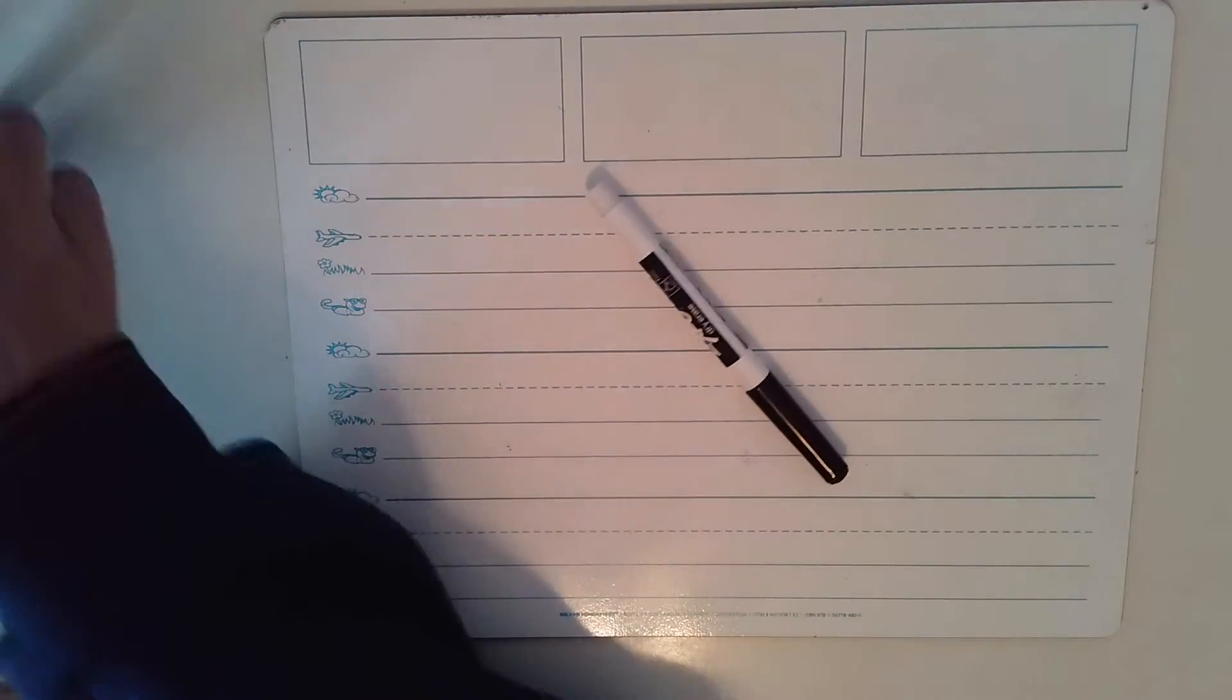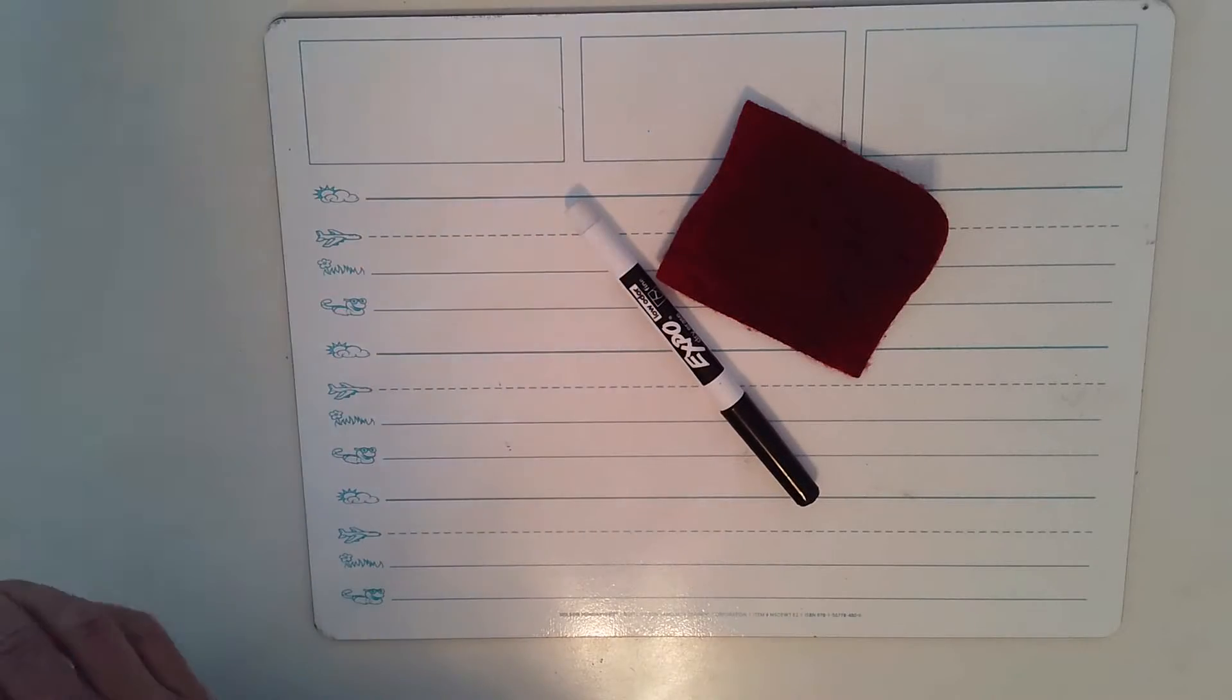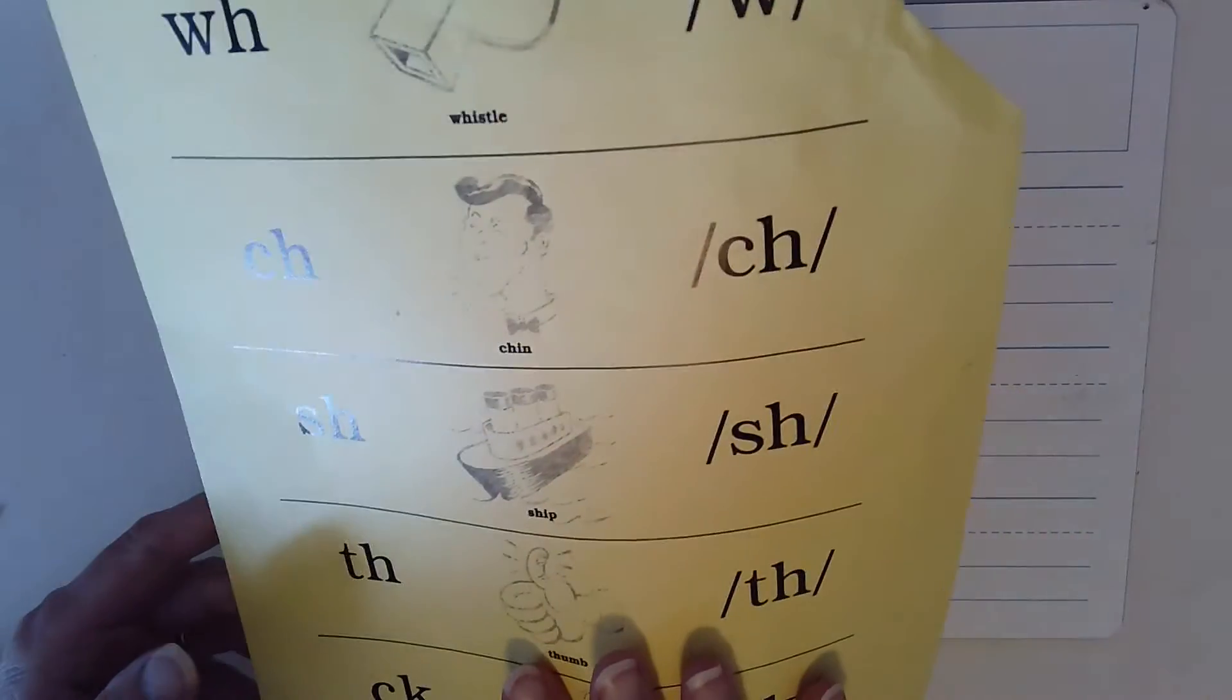Hi, you need your whiteboard, a pen, an eraser, and your alphabet chart with your digraphs might be helpful.